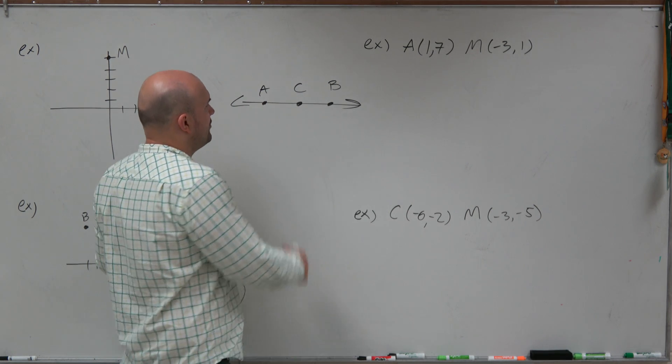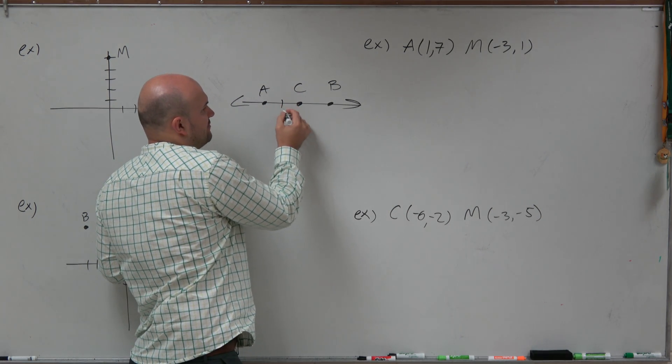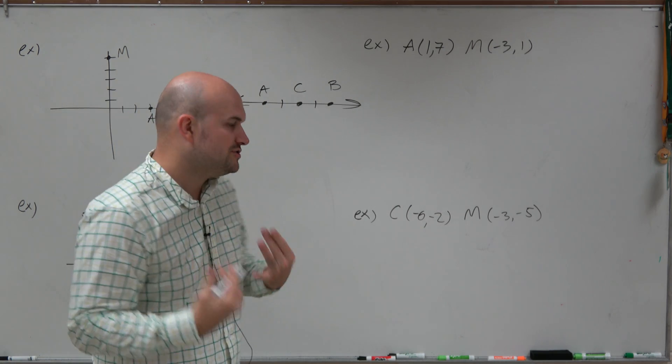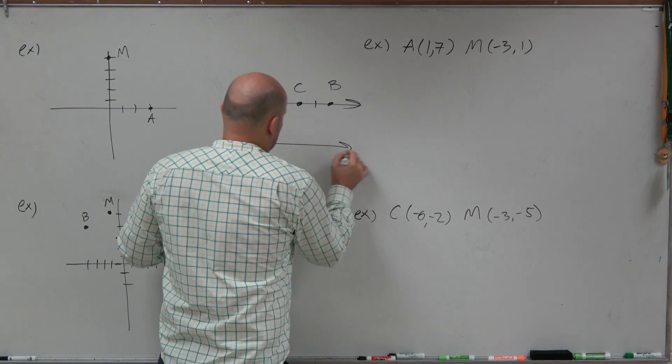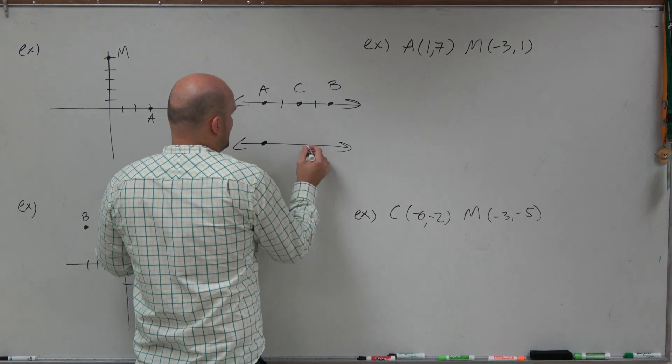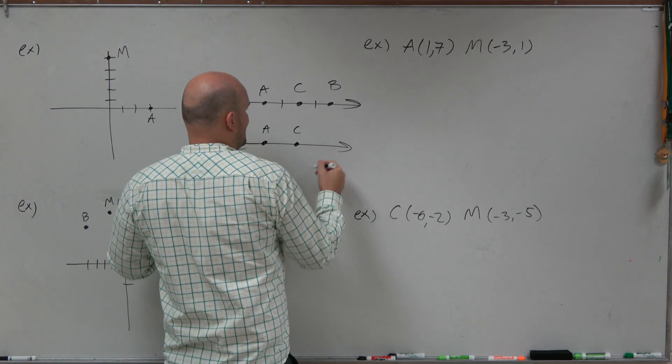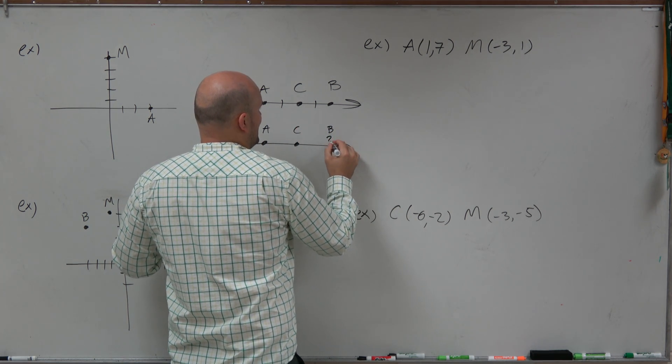The main important thing was that the distance from A to C was equal to the distance from C to B. So now, what we're basically given is the same exact kind of problem, except now we're given A and C, and we want to figure out where is B.